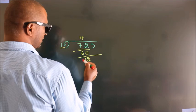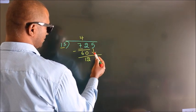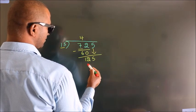After this, bring down the next number. So 5 down, giving us 125.